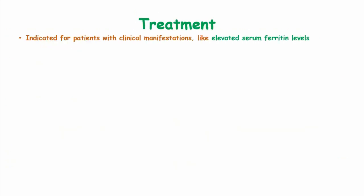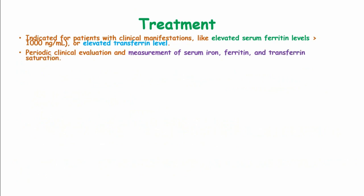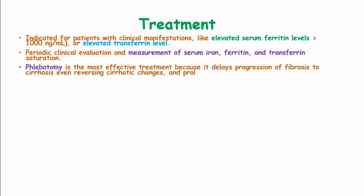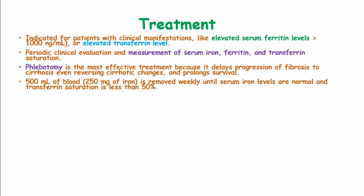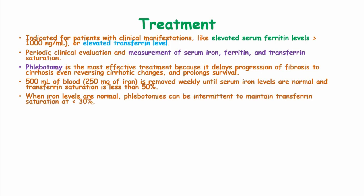Treatment is indicated for patients with clinical manifestations, elevated serum ferritin levels of more than 1000 ng/mL, or elevated transferrin levels. Periodic clinical evaluation and measurement of serum iron, ferritin, and transferrin saturation is important during treatment. Phlebotomy is the most effective treatment because it delays progression of fibrosis to cirrhosis, can even reverse cirrhotic changes, and prolongs survival, though it does not reduce the chances of developing hepatocellular carcinoma. 500 mL of blood, representing 200 mg of iron, is removed weekly until serum iron levels are normal and transferrin saturation is less than 50%. When iron levels are normal, phlebotomies can be intermittent to maintain transferrin saturation less than 30%.